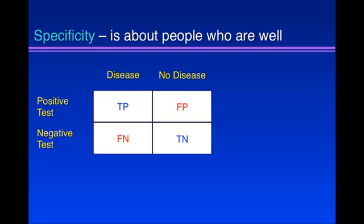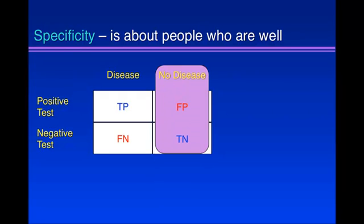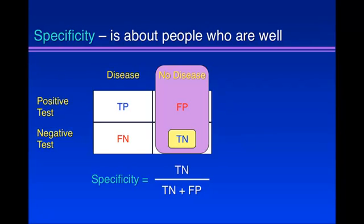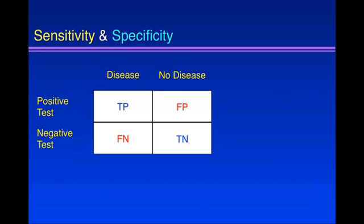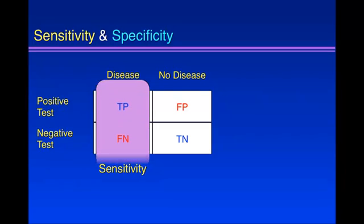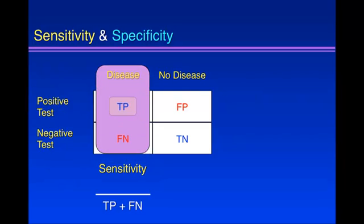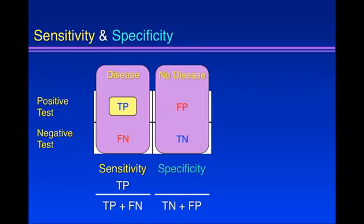Specificity is about people who are well. They're over here, and that column serves as the denominator for specificity: true negatives plus false positives. The numerator is down here — it's the good result, when the test is right: the true negatives. Specificity addresses the question: among people who are well, how often is the test right? So sensitivity is about this column — how often is the test right? And specificity is about this column — again, how often is the test right?